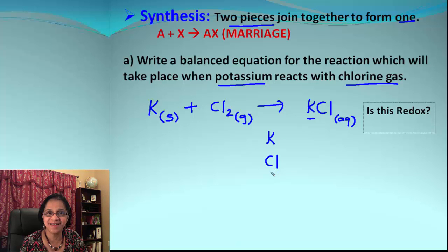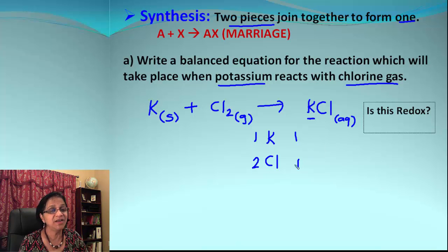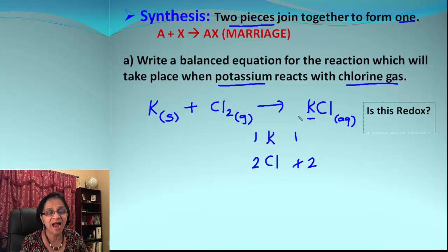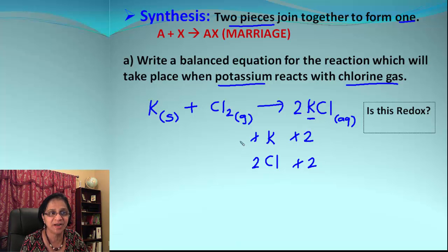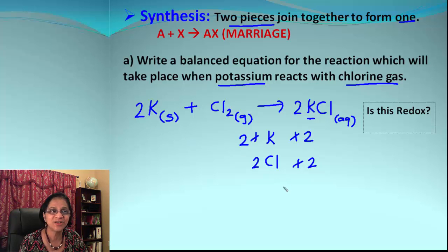Now let's work on balancing the equation. Let's list the elements present in reactants and products — that's only potassium and chlorine — and list the number of atoms of each element before balancing. For the reaction to be balanced we have to match the number of atoms. Chlorine becomes two on the reactant side, so we make the product side 2 KCl. That makes potassium two atoms, so we make the reactant side 2 K as well. The balanced equation is: 2K + Cl₂ → 2KCl.